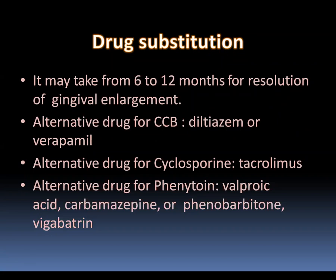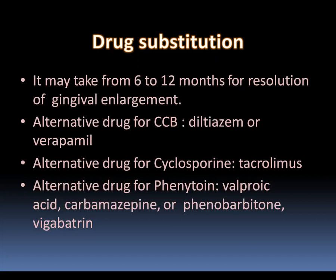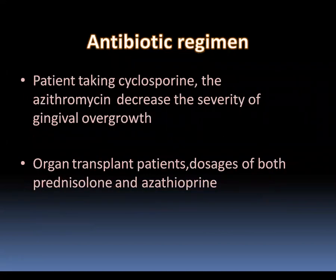After changing the drug, it may take 6 to 12 months for regression of gingival enlargement. Alternate drugs: for calcium channel blockers, diltiazem or verapamil; for cyclosporine, tacrolimus; for phenytoin, valproic acid or carbamazepine. These substitutions are only made when gingival enlargement is seen as a side effect. For patients taking cyclosporine, azithromycin decreases the severity of gingival overgrowth. For organ transplant patients, dosages of prednisone and azathioprine may also help decrease tissue growth.